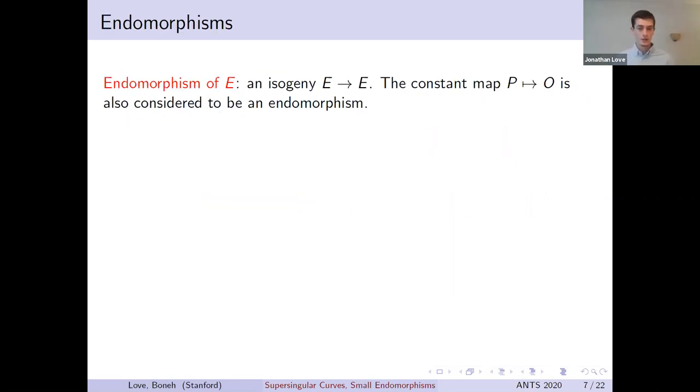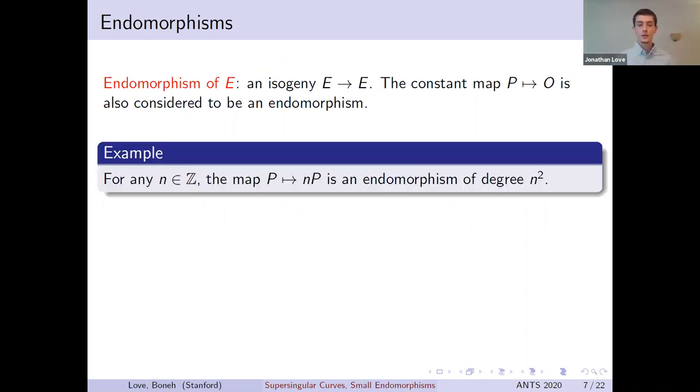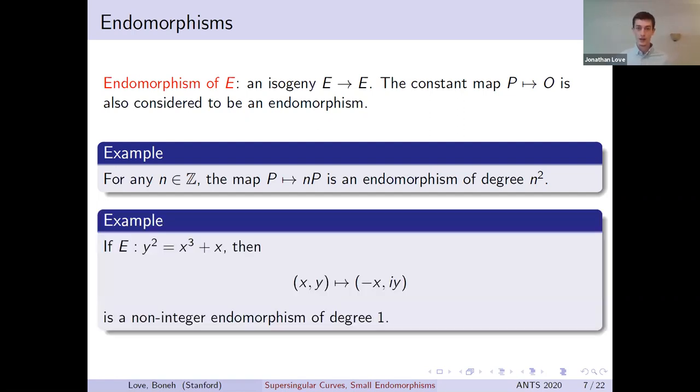Now, if you have an isogeny from a curve to itself, we call it an endomorphism. Technically, we excluded constant maps from the definition of isogenies, but we will also include the zero map as an endomorphism. For example, given any elliptic curve and any integer n, multiplication by n gives an endomorphism of the curve, and this has degree n². But we can also have non-integer endomorphisms. For instance, if E is defined by y² = x³ + x, then if we negate x and multiply y by i, this preserves the equation of the curve. This gives us an example of a non-integer endomorphism of degree 1.